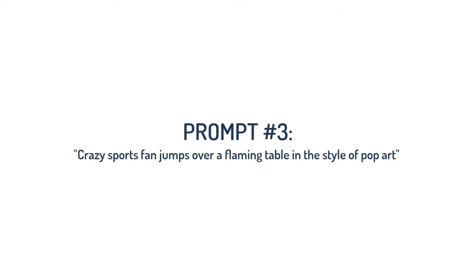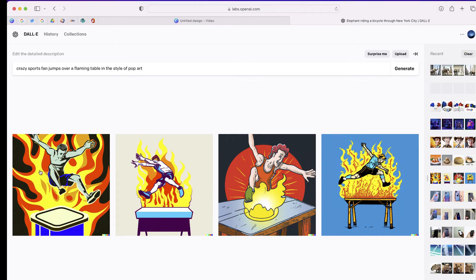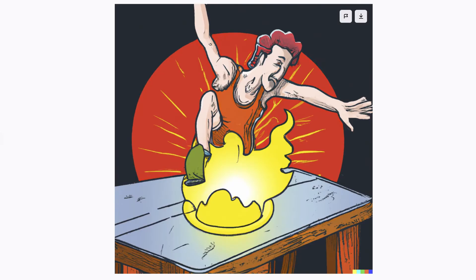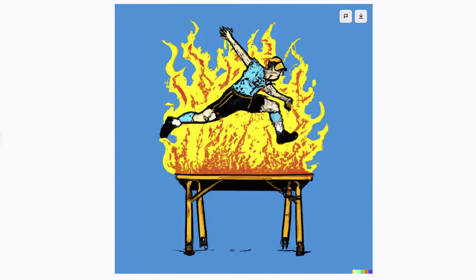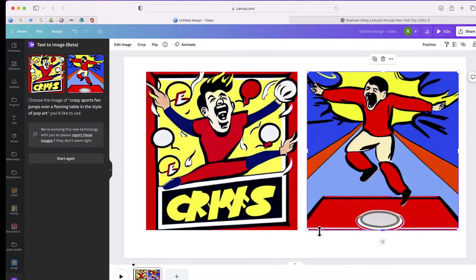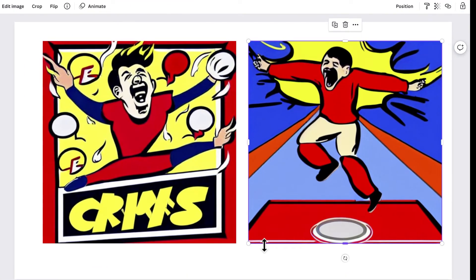Here's our next one: a crazy sports fan jumps over a flaming table, in the style of pop art. This is what DALL-E 2 was able to generate, and these were the images that Canva was able to generate.